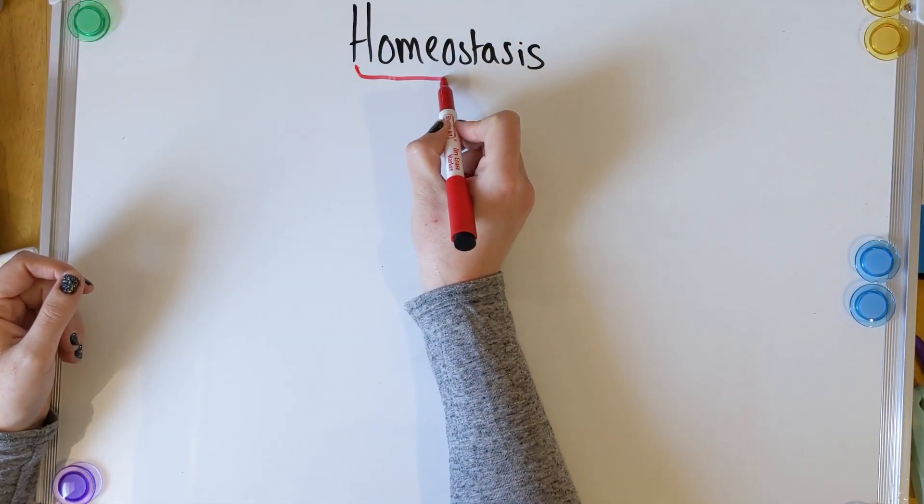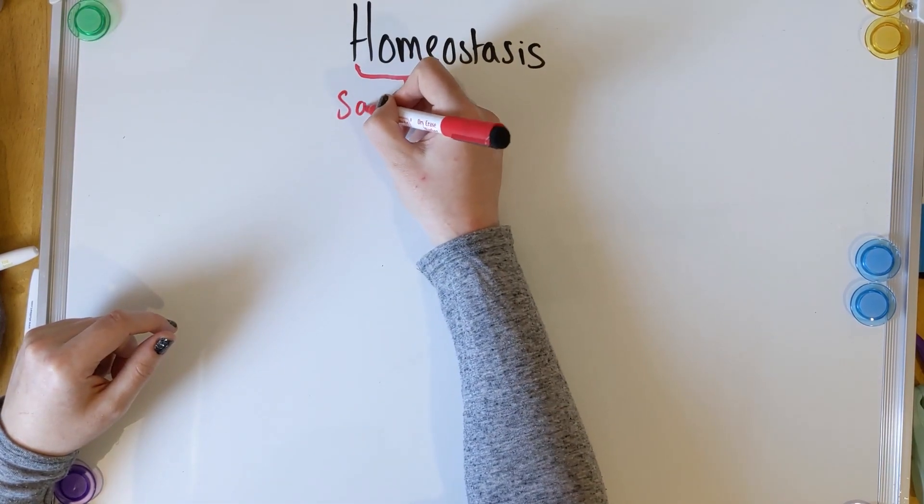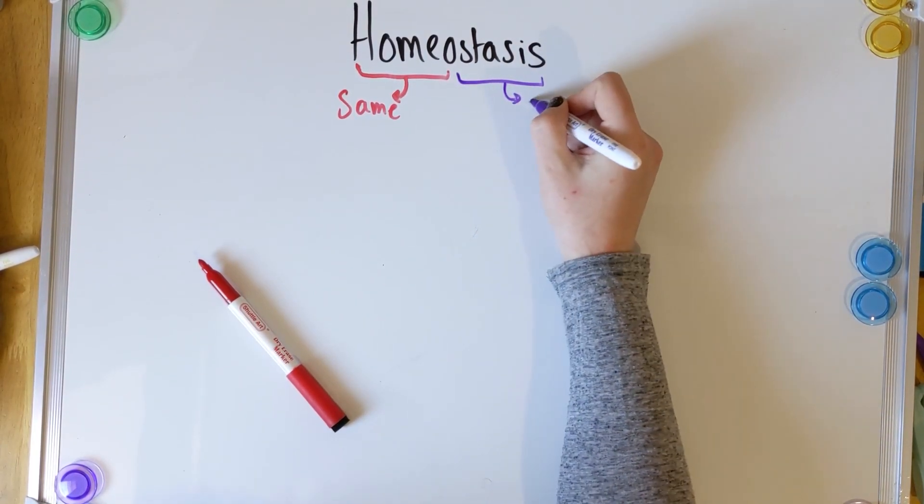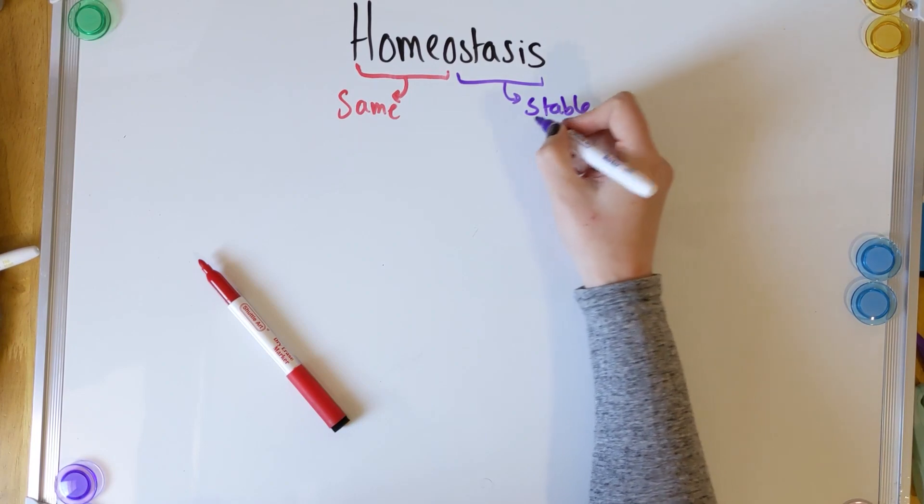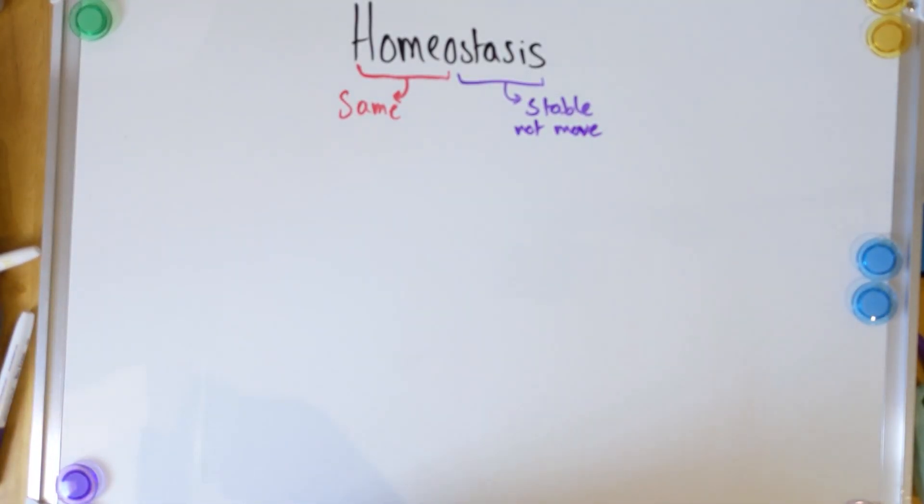So we've got two parts. We've got 'homeo' — think of homo, as in homosexual, meaning attracted to the same gender. In this case, we're taking the bit that means something is staying the same. And you pair that up with 'stasis', which means keeping something stable or not letting it move. So homeostasis has got to be to do with keeping things the same, keeping things stable. So if we're going to write ourselves a definition, homeostasis is the control of a constant internal environment.